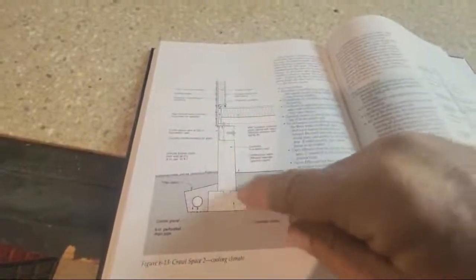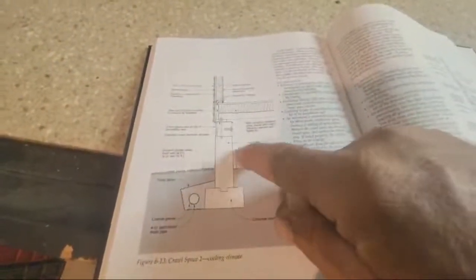You want to seal the radon blanket in all the holes and penetrations. You might even want to put a sump pump in here, especially if you have issues. This is a vented crawl space, so let's move over to this page here.